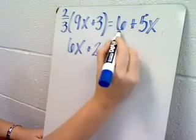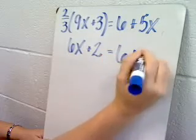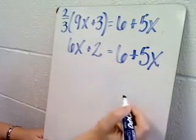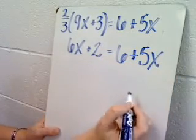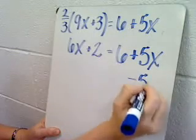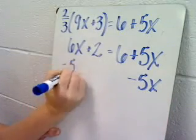On the other side of the equation, I'm going to bring down my 6 plus 5x. Now I'm going to get my x's together. I'm going to subtract 5x from both sides of my equation.